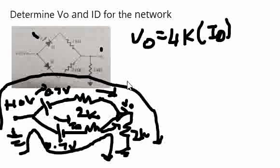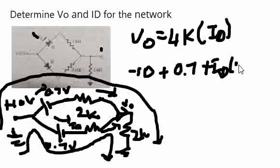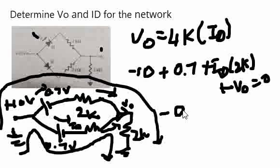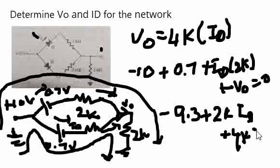Now, let us take one outer equation. Minus 10 plus 0.7, plus ID into 2K, plus V0 is equal to 0. Now, let us substitute V0 here. Minus 9.3 plus 2K ID plus 4K ID is equal to 0.